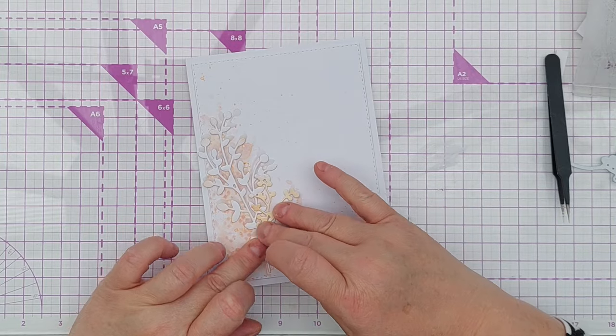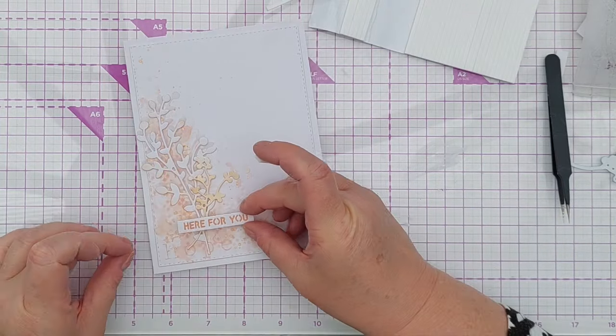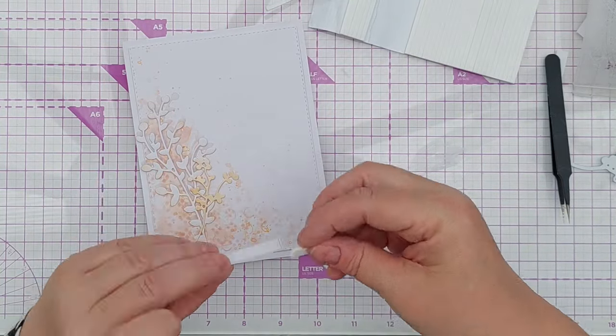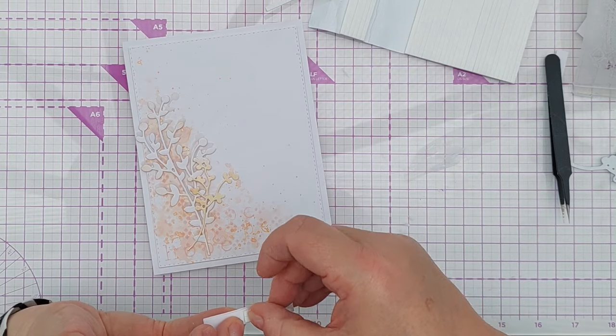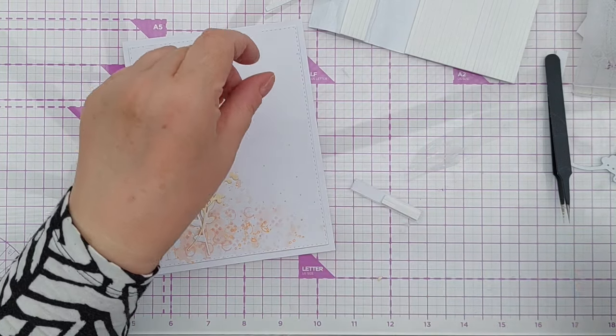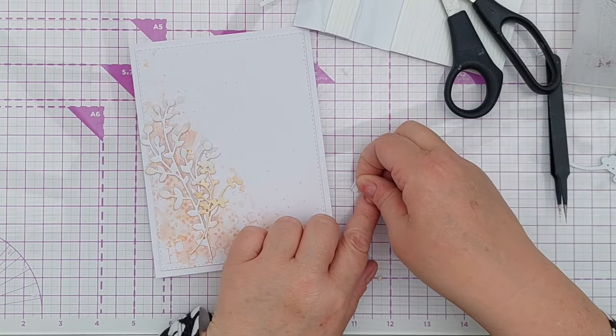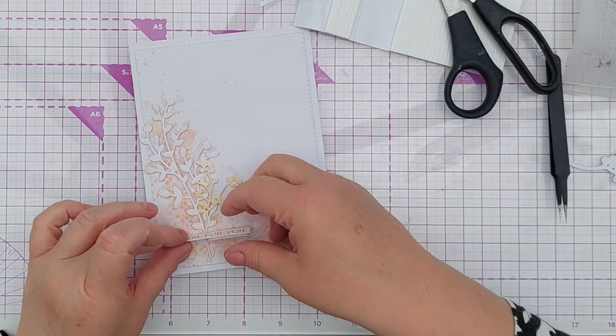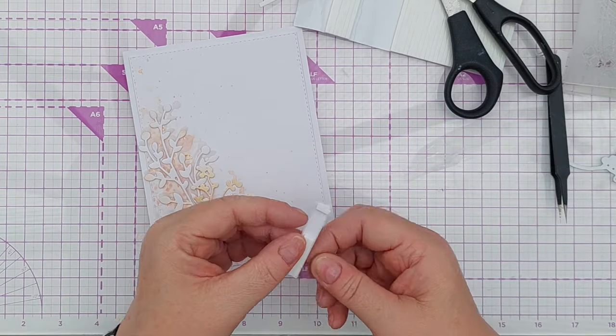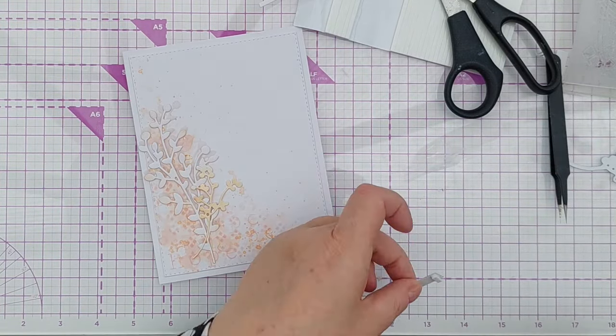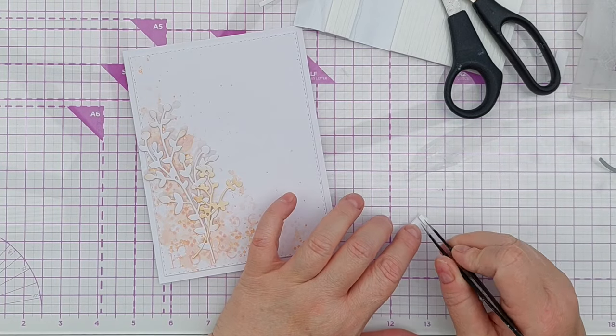To add my sentiment strip I used craft foam for a bit of dimension. I did leave a break in the craft foam where the strip was going to go over the twigs or the stems of the branch so that it stayed level and it didn't go bumpy where it went over that area.